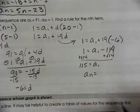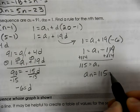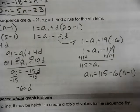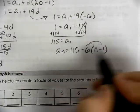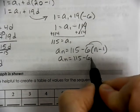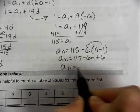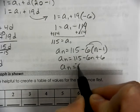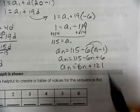So our rule is the first term plus our common difference, which is negative 6, n minus 1. Distribute. Collect your like terms, which is 121. So we're going to say negative 6n plus 121.